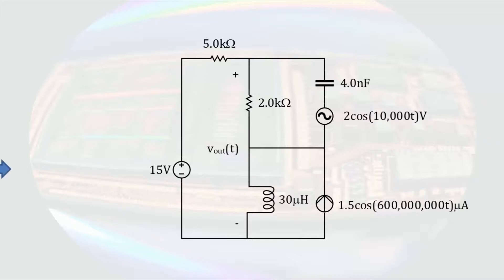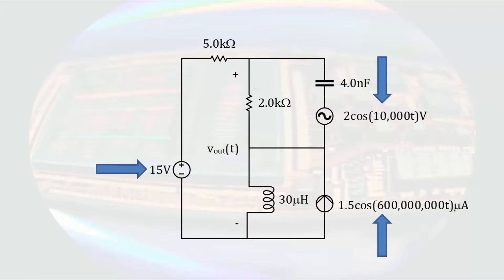Now we will look at a more interesting example. In this circuit there is a 15 volt DC source, a sinusoidal voltage source with a magnitude of 2 volts, and a sinusoidal current source. We need to analyze the DC and each sinusoidal source separately. We will also see how different the impedance of the energy storage device is to each of the two individual sinusoidal sources. Determining Vout will require superposition, and since we have three sources, that will require three separate analyses.